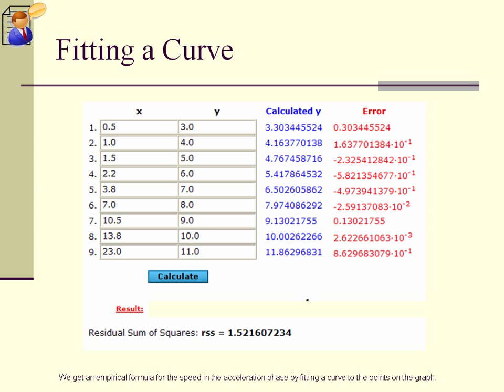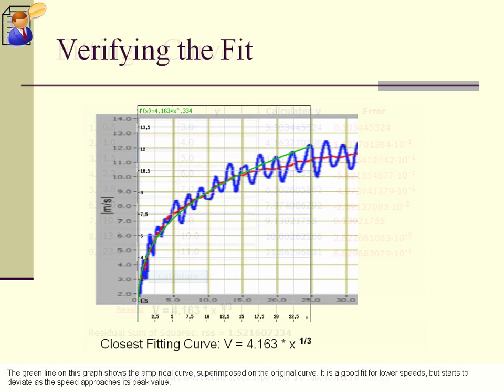We get an empirical formula for the speed in the acceleration phase by fitting a curve to the points on the graph. The resulting formula shows that the speed depends on the cube root of the distance. The green line on this graph shows the empirical curve, superimposed on the original curve. It is a good fit for lower speeds, but starts to deviate as the speed approaches its peak value.